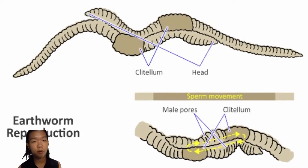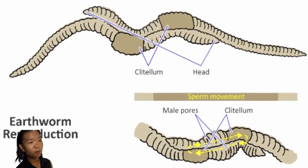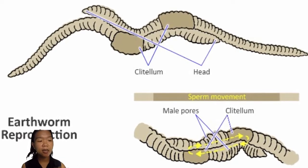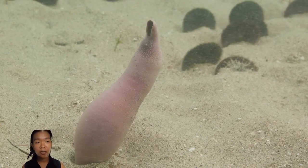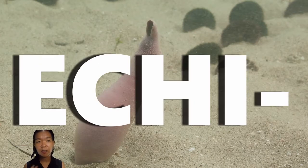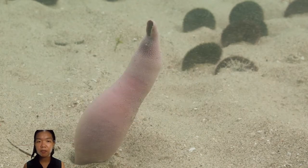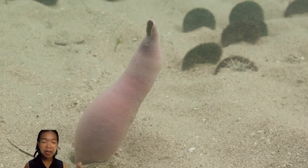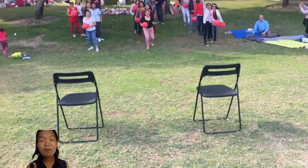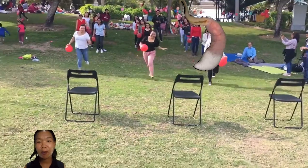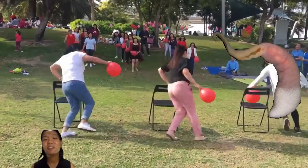The clitellum secretes a cocoon for the embryos and also secretes mucus to facilitate the transfer of sperm, because many members of this group are hermaphrodites — an exchange of sperm facilitated by the clitellum. If we treat Echiura as a separate class, 'echin' means spines and 'ura' means tail, so most of the setae along the body are concentrated more toward the posterior end — a spiny butt.